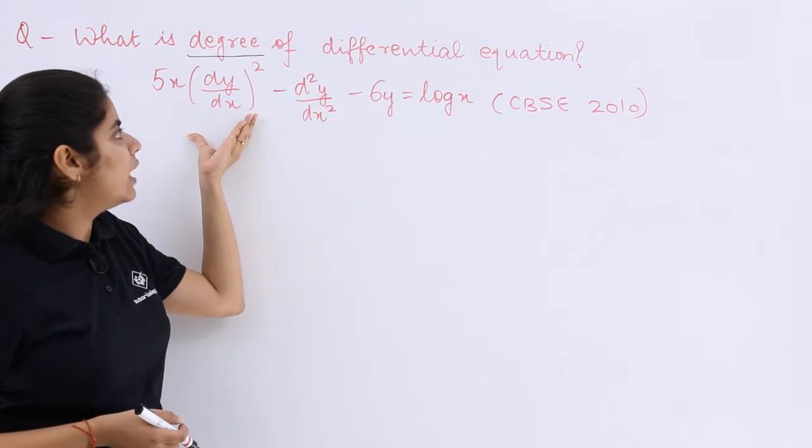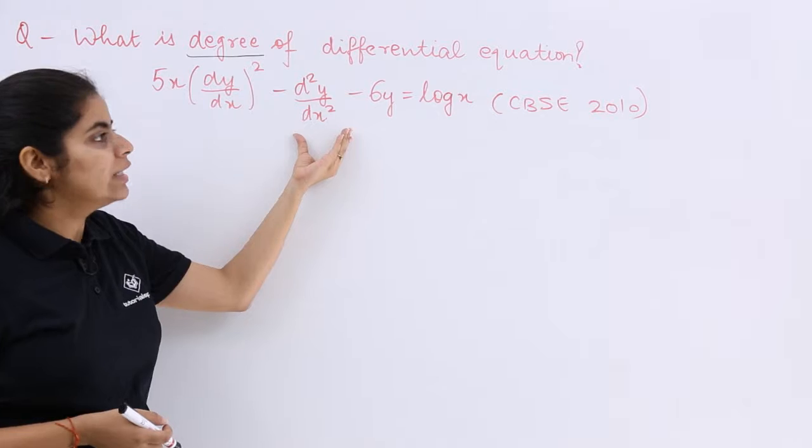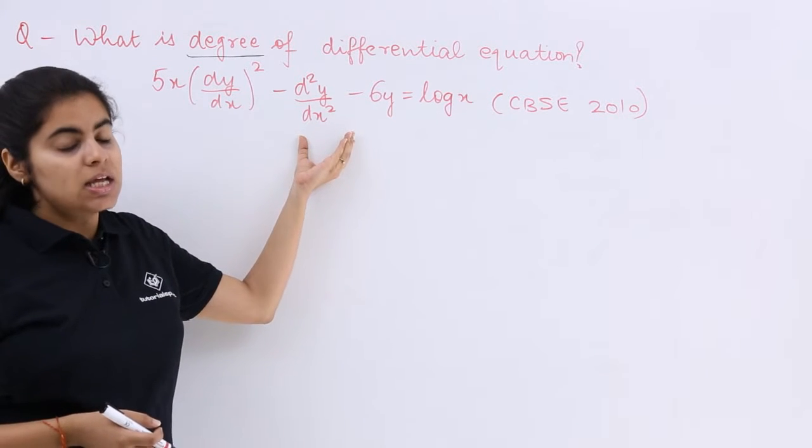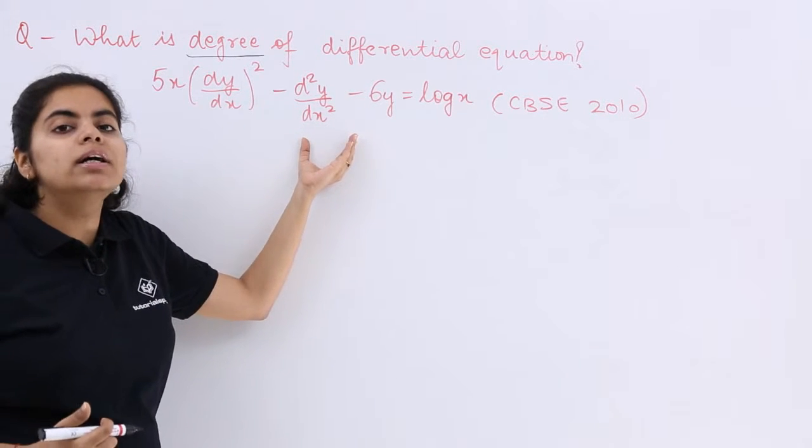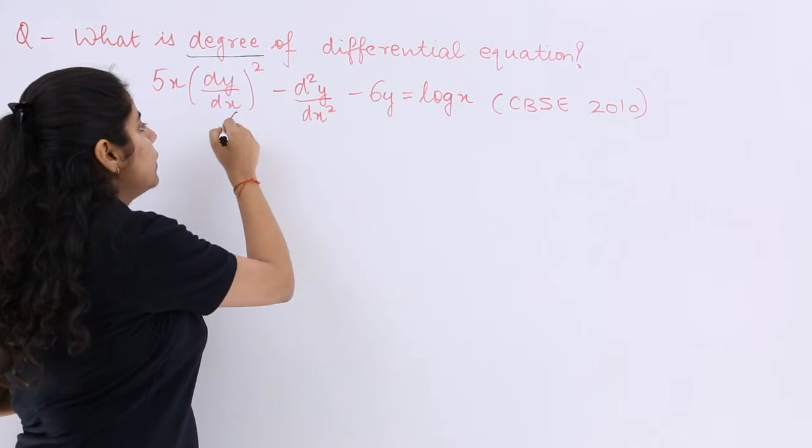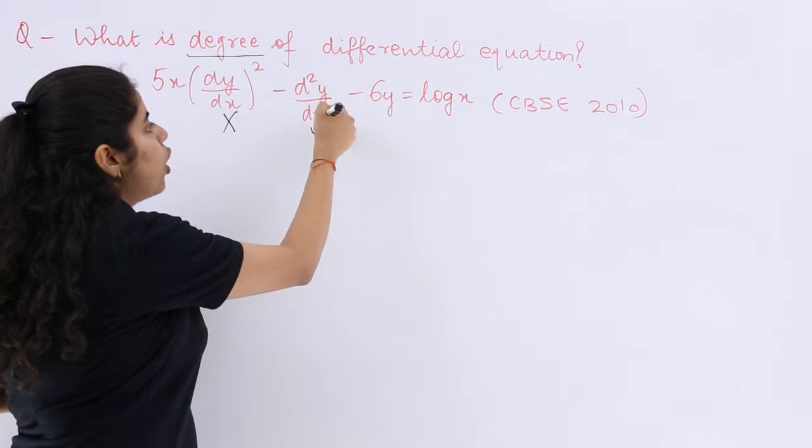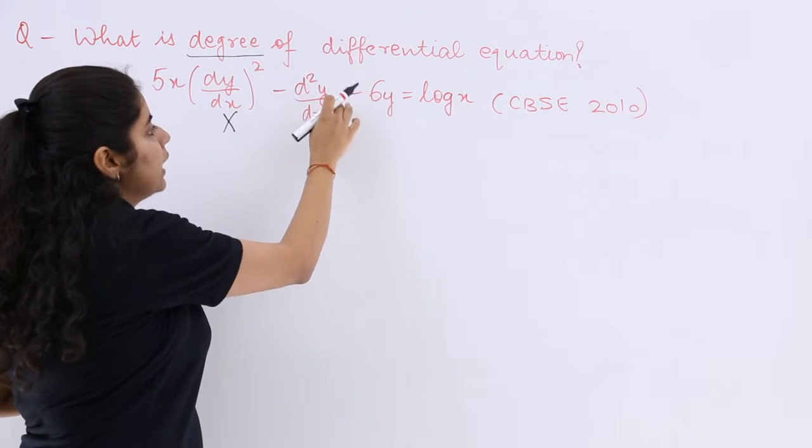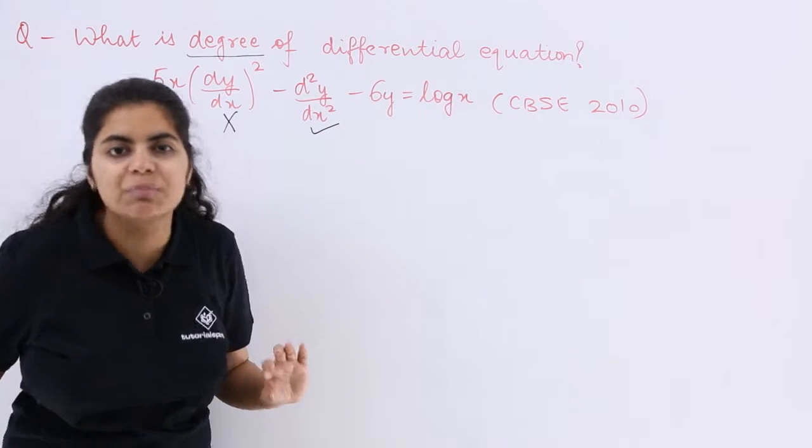Here it is dy/dx whole square, and here it is d²y/dx². Now what is the order? Order is the highest order possible in this differential equation, which is here. So order should be 2 because it is the second order derivative that is participating.